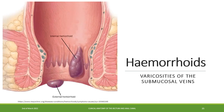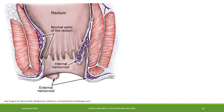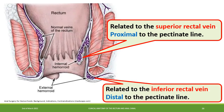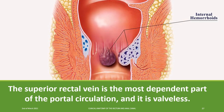Hemorrhoids are varicosities of submucosal veins. There are two types: internal and external. Internal hemorrhoids are related to the superior rectal vein and located proximal to the pectinate line, while external hemorrhoids are related to the inferior rectal vein and located distal to the pectinate line. The superior rectal vein is the most dependent part of the portal circulation and is valveless.